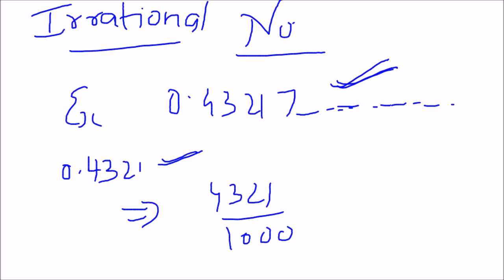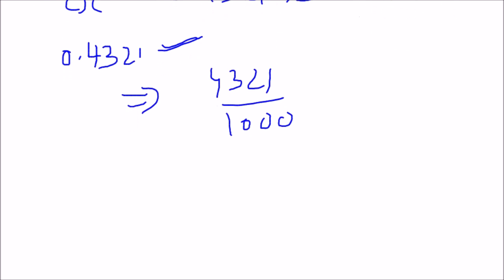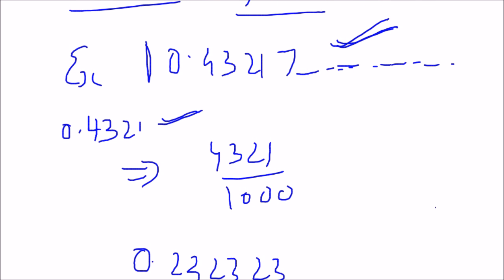It should also be non-recurring, meaning non-repetitive. If a number were repeating itself — like 0.23232323... — it could again be written as a fraction and converted into a rational number. But a number that is both non-recurring and non-terminating is irrational because it cannot be written as a ratio. That's why its name is irrational — not a ratio.